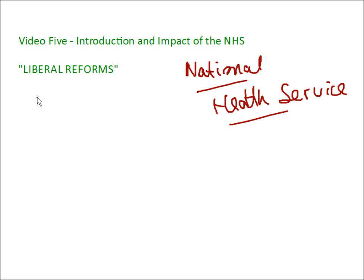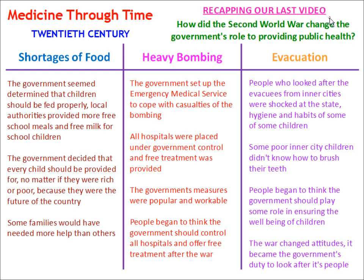The main School History Project textbook calls this bit of work Liberal Reforms, and I think a few of the exam specifications call it that as well, but it's all the same thing. Recapping our last video, we looked at a slide explaining how the government's role was really changed by the Second World War and how they looked to provide public health measures as a result. If this is a bit unfamiliar, you may wish to look at Video 4 in the topic of 20th Century Medicine.